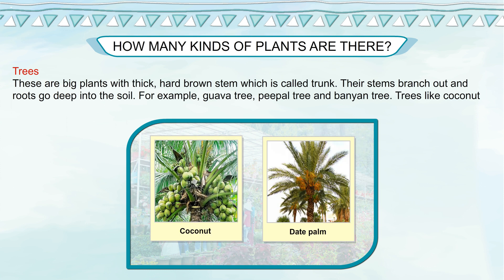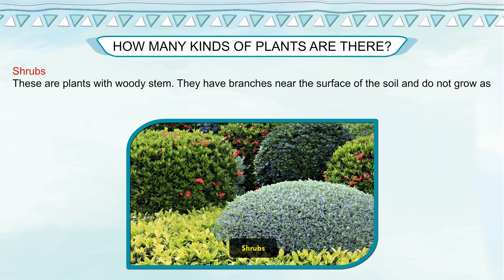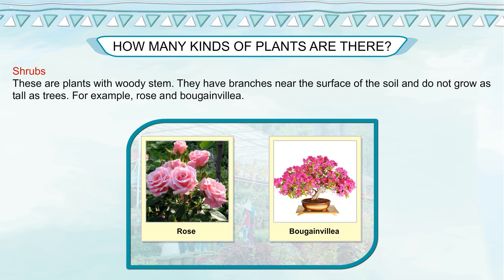Trees like coconut and date palm do not have branches. Shrubs: these are plants with woody stem. They have branches near the surface of the soil and do not grow as tall as trees. For example, rose and bougainvillea.